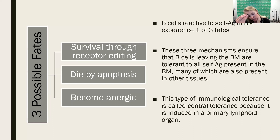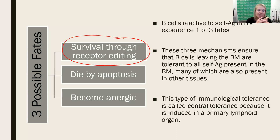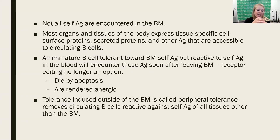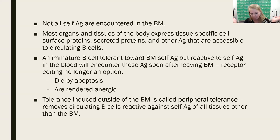Because this happens in the bone marrow, any cell that survives — either through receptor editing or first time around — is going to have self-tolerance. Because it's in the bone marrow, we call it central tolerance, since the bone marrow is a primary lymphoid organ. But we have to remember that not all self-antigens are encountered in the bone marrow. There are still tissues outside of the bone marrow that have special markers that wouldn't be around in the bone marrow, so B-cells would never get tested on their ability to bind those. When B-cells leave the bone marrow, they move out to the secondary lymphoid tissues.